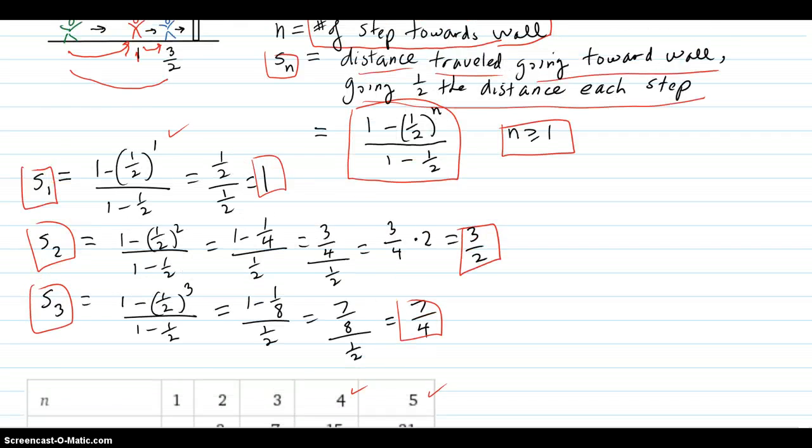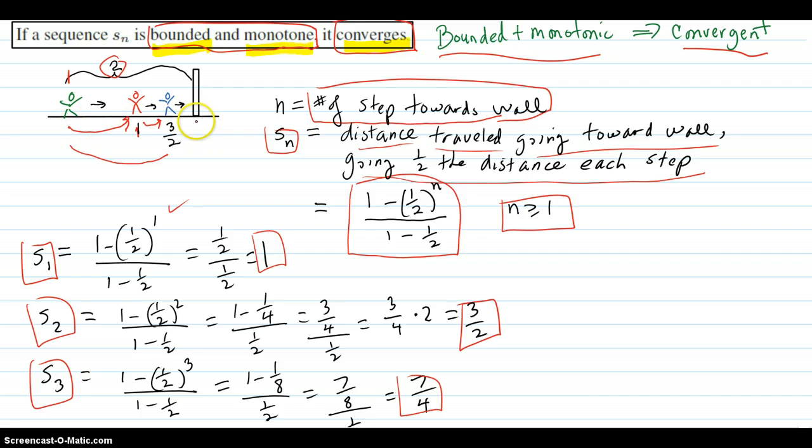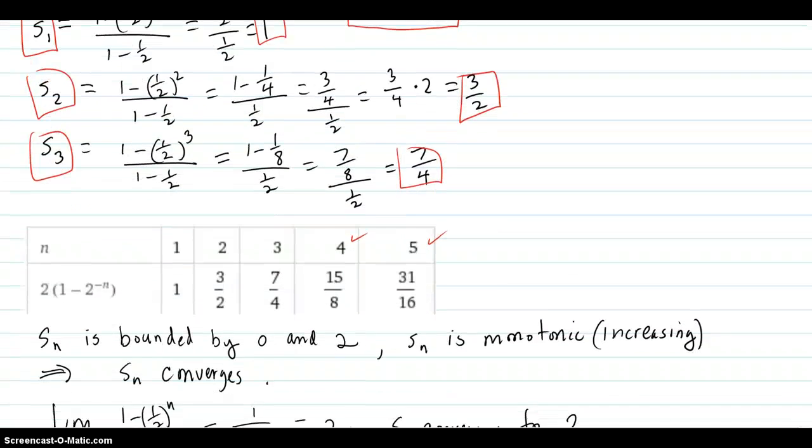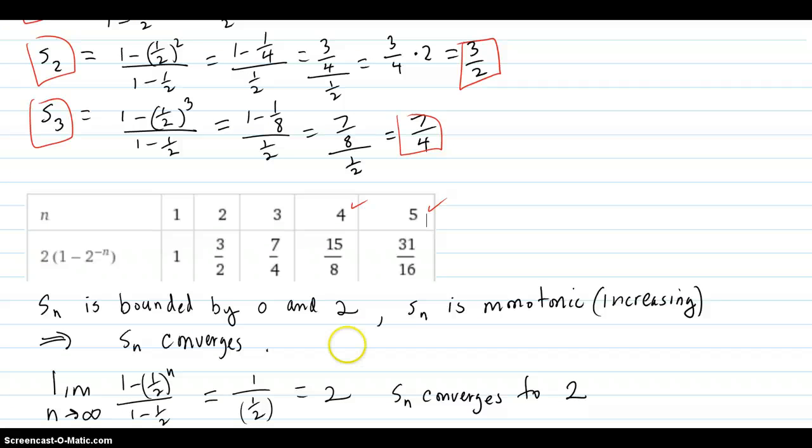So, since you started two feet away, you're never going to walk through the wall. You're going to be bounded by two feet for sure. So, the sequence terms are bounded by zero below and two above.